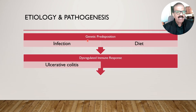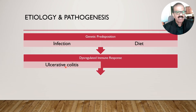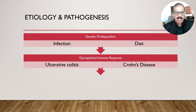In ulcerative colitis, this inflammation is confined to the mucosa and submucosa. There are four layers of the intestine: mucosa, submucosa, muscular layer, and serosa. Crohn's disease can affect all four layers, but ulcerative colitis mostly affects the mucosa and submucosa.